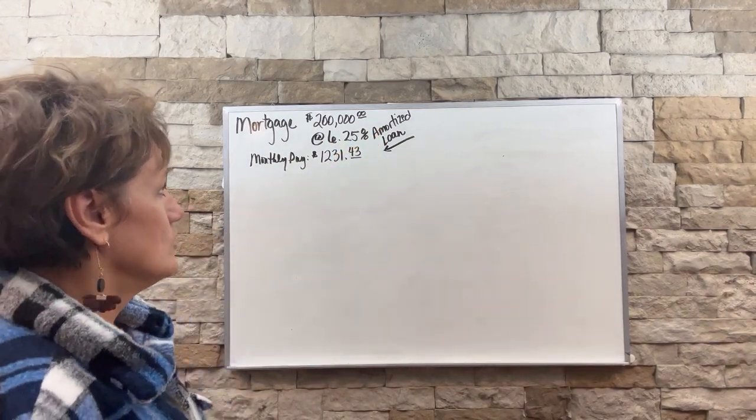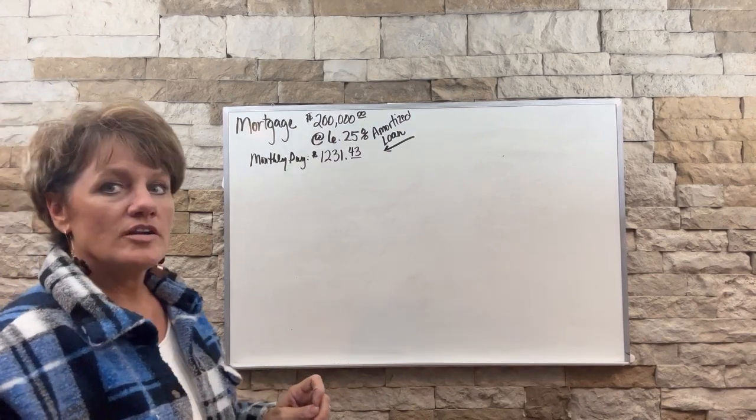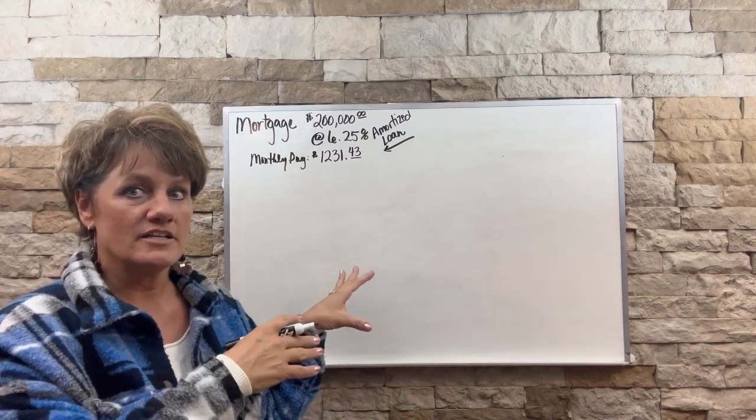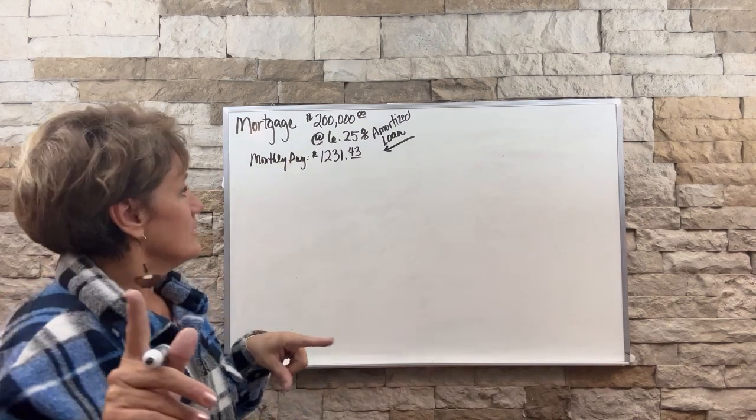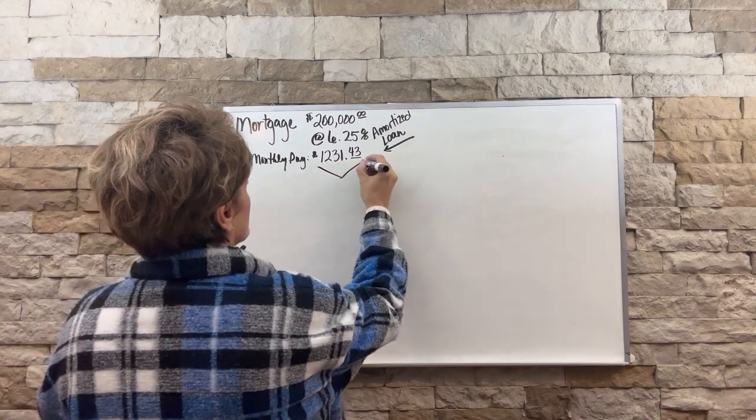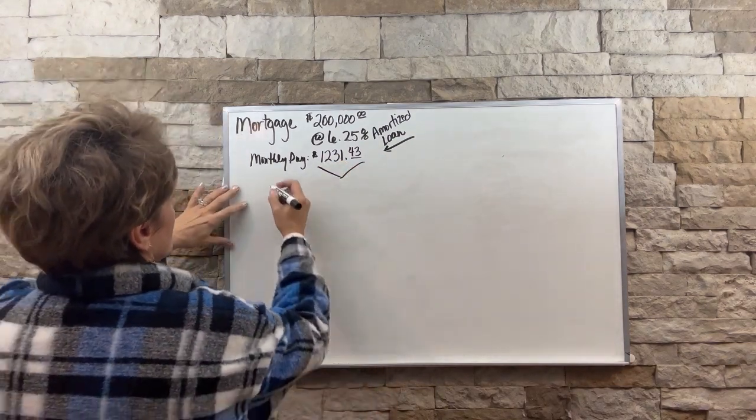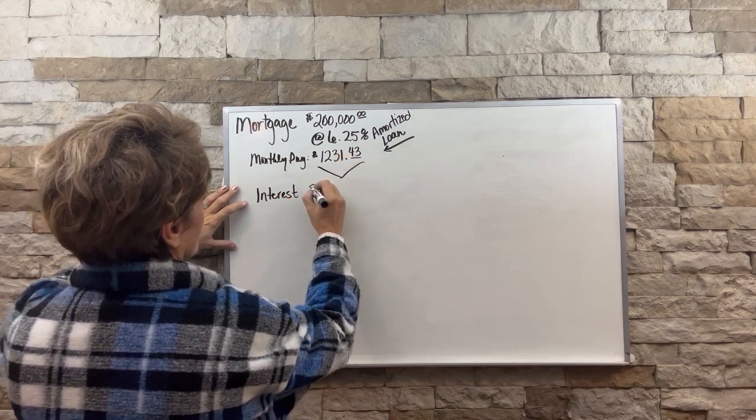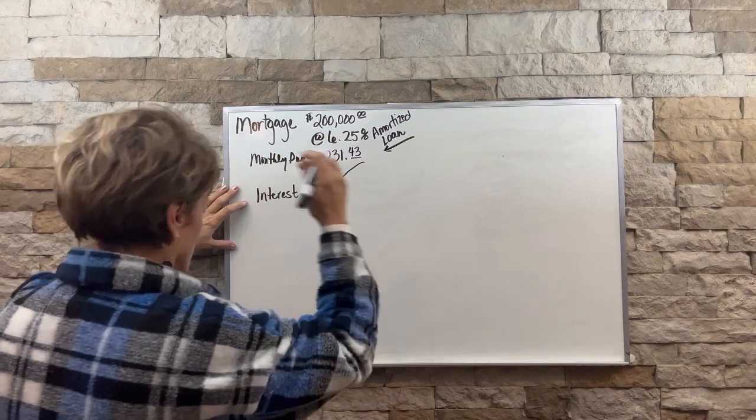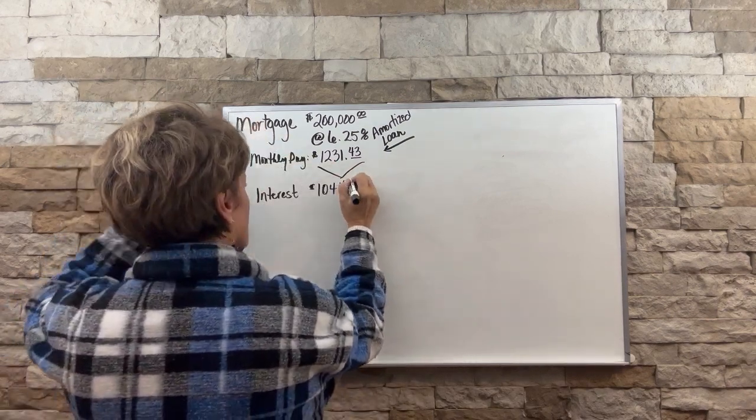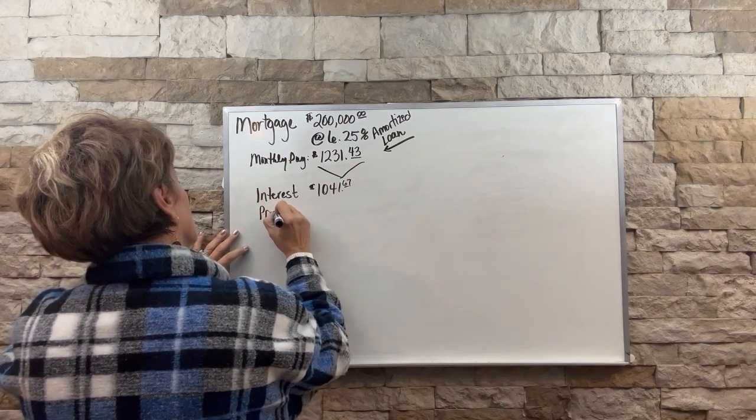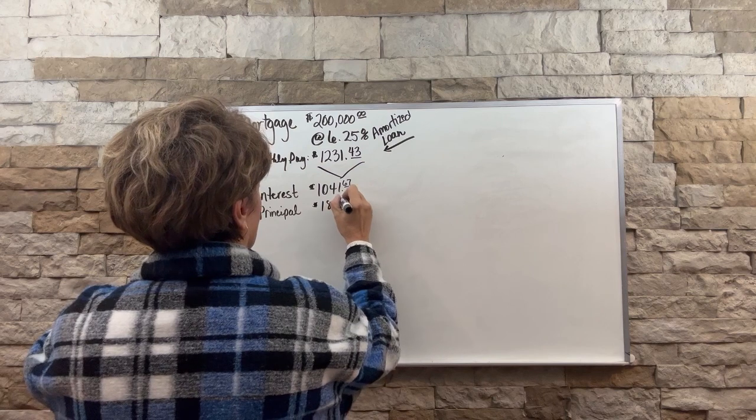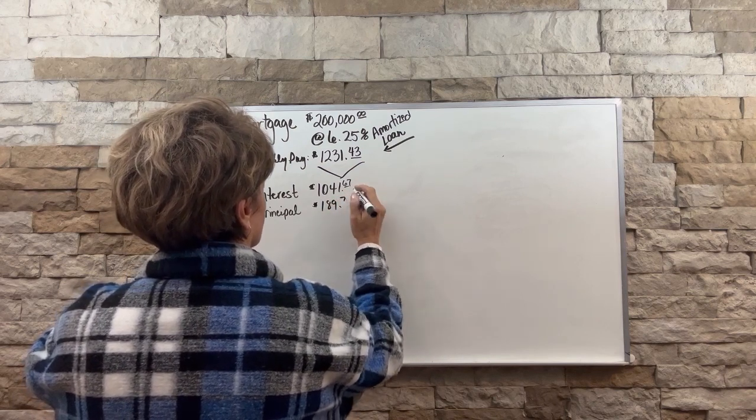This is an amortized loan. So anytime that you're talking about an amortized loan, you're talking about most of the interest is stacked at the very start of the loan. So let me show you why or how. So if you have the $1,231 payment, then you're going to have an interest payment. The interest part of this amount is $1,041.67 and then the principal part of the payment is $189.76.